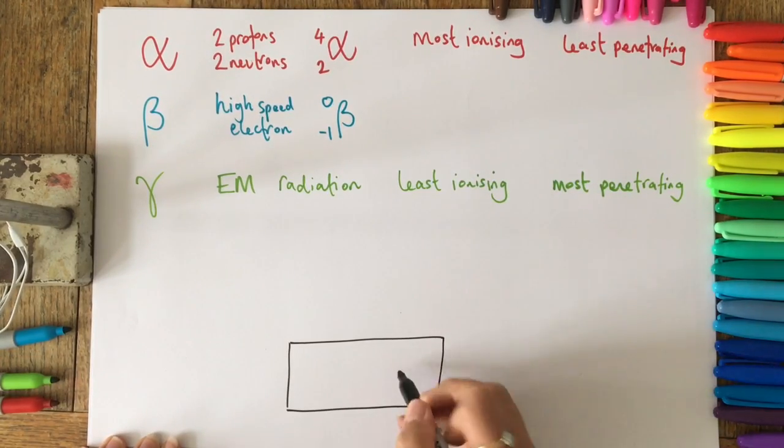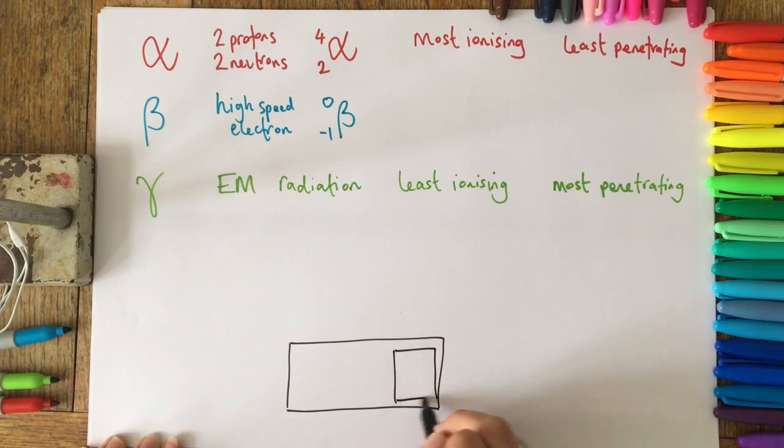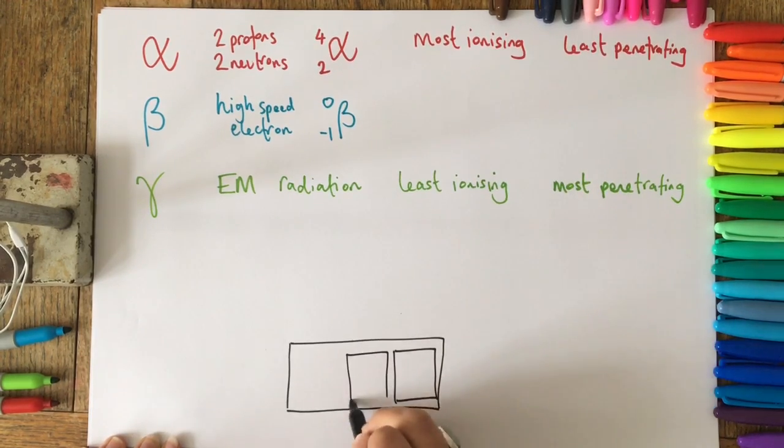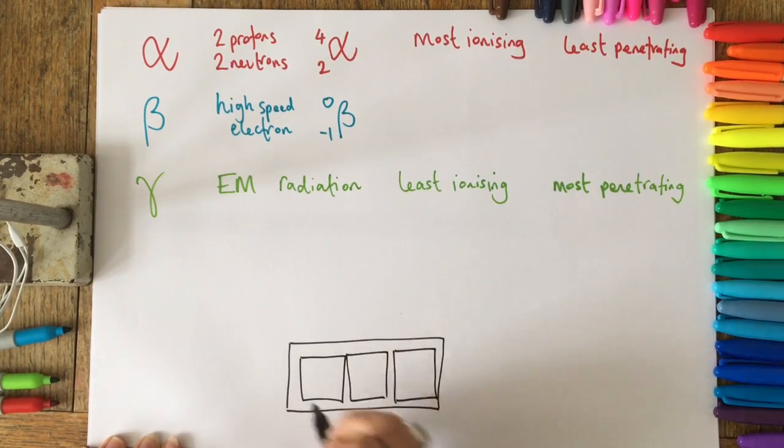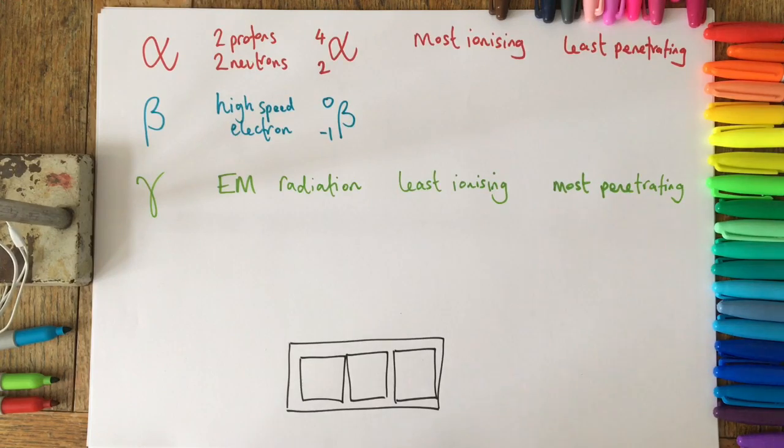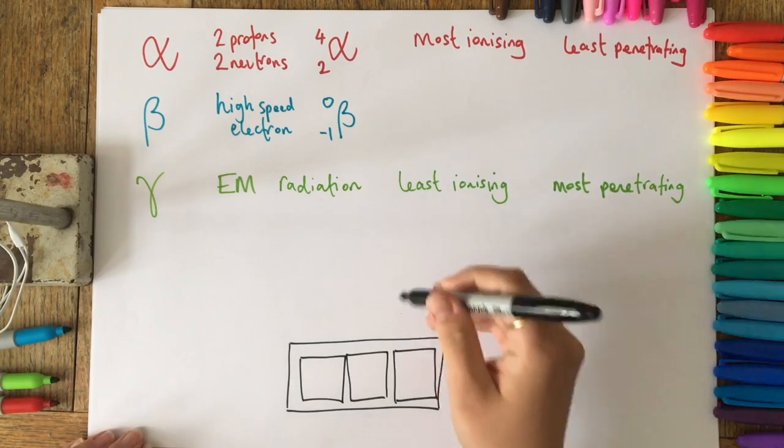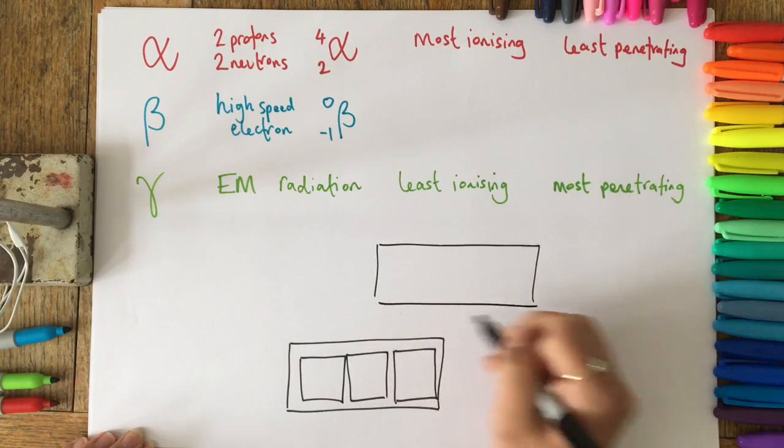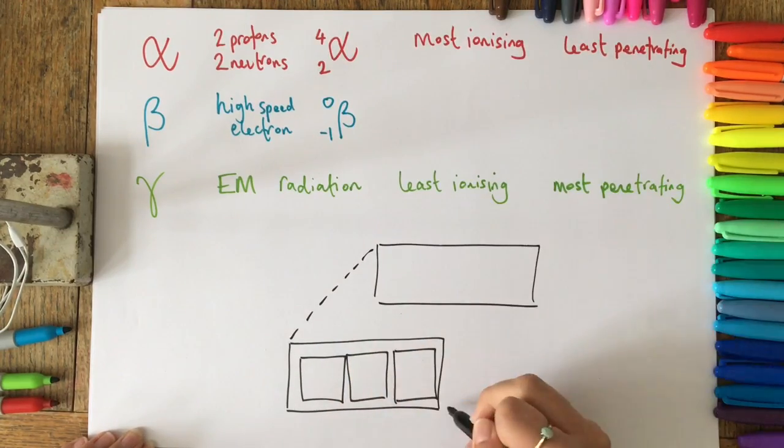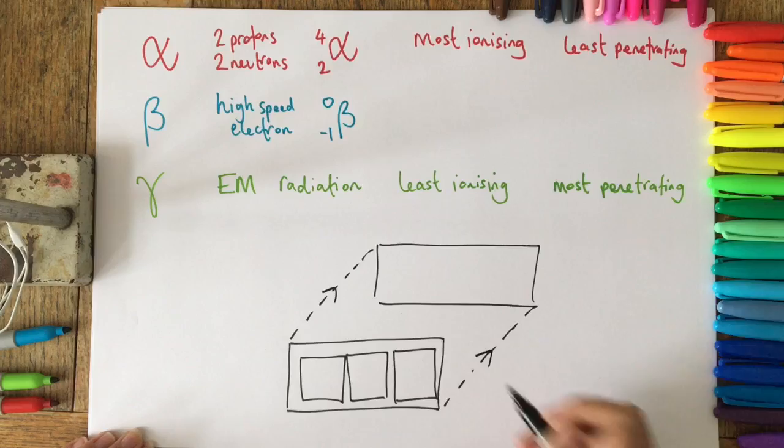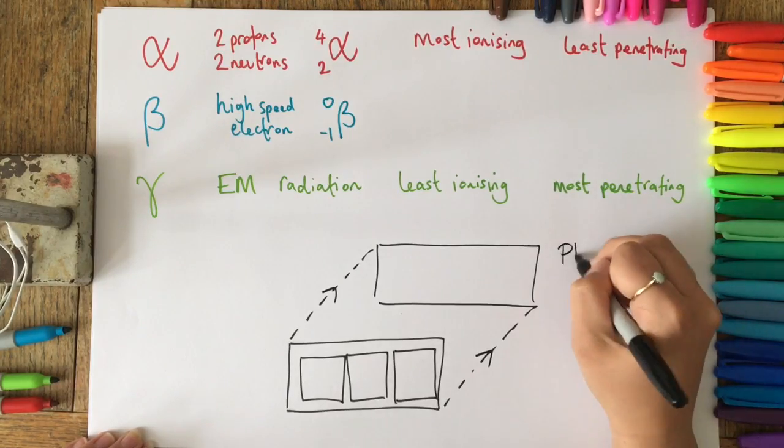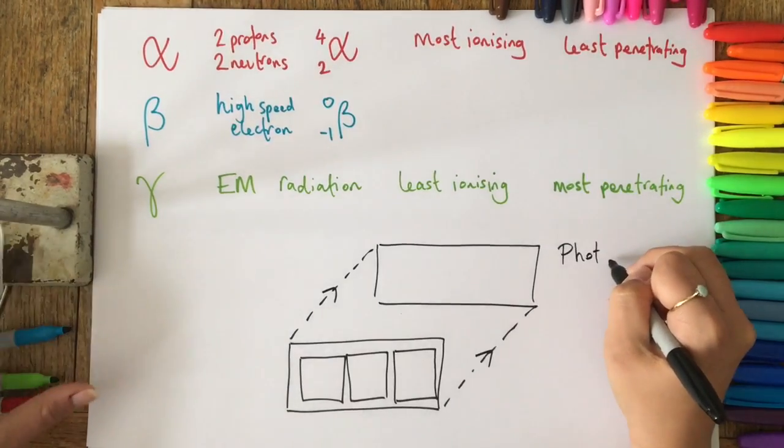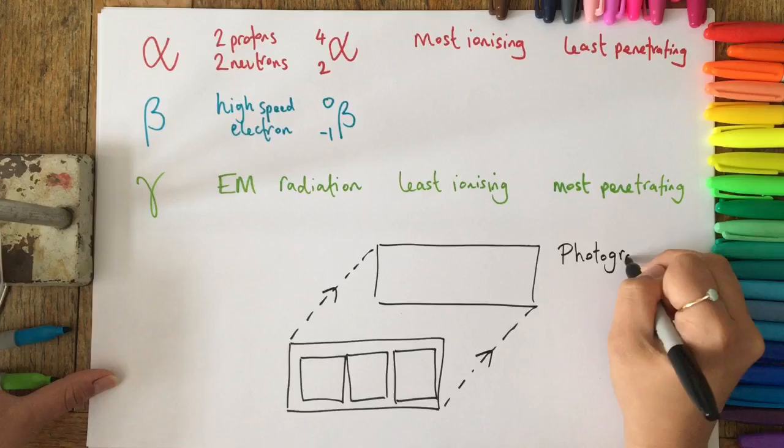We're now going to look at the monitoring badge. These badges would be worn by people who work with ionizing radiation to monitor their dose. This is the front of the badge I've just drawn, and the three rectangles represent the windows that would have different materials covering them. The next rectangle is imagining that the back of the badge has been pulled behind slightly. The back of the badge has got photographic film on it.